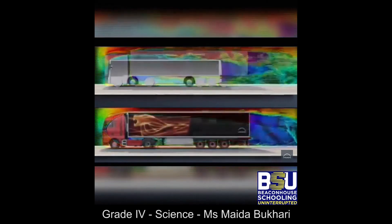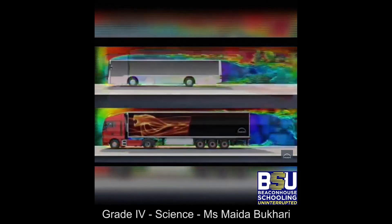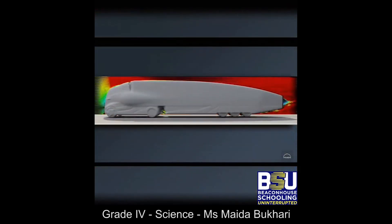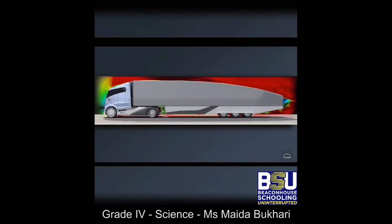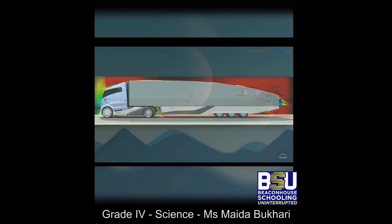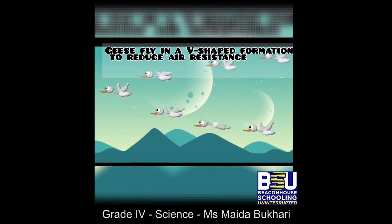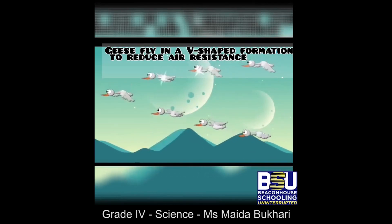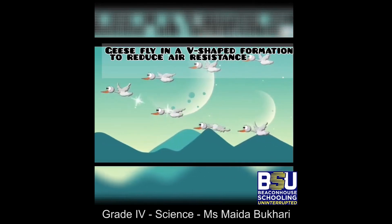Large and flat surfaces generate more air resistance than thin narrow objects. That is the reason fast-moving vehicles are built with thin shapes to cut easily through air. Some birds know this phenomenon — that is the reason they fly in a V-shaped formation to reduce air resistance.